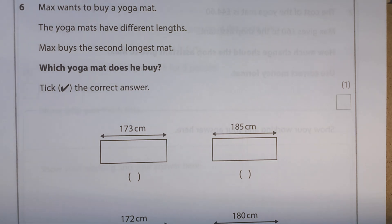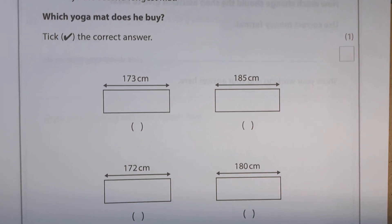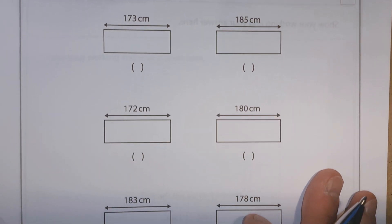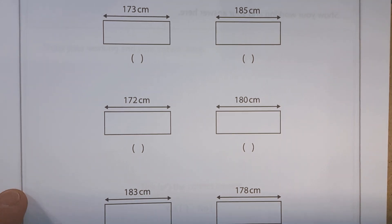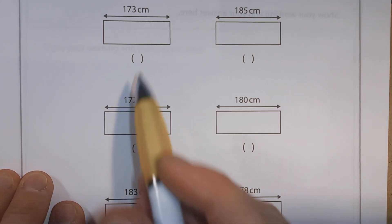Question 6. Max wants to buy a yoga mat. The yoga mats have different lengths. Max buys the second longest mat. Which yoga mat does he buy? Okay, so let's have a look. We've got the measurement here. He wants the second longest. And we've got six of them there. Okay, so maybe let's try and rank them in order. Which would be the longest?